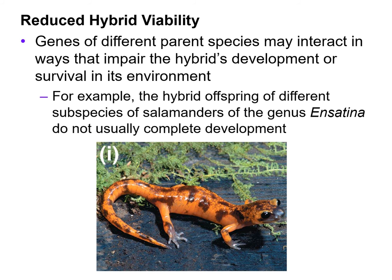The first one we will look at is reduced hybrid viability — meaning this is a sickly little creature. It might die during birth or once it's born. Genes of different parent species may interact in ways that impair the hybrid's development or survival in the environment. For example, the hybrid offspring of different species of salamanders do not usually complete development — a spontaneous abortion may occur, or a sickly salamander would be born that dies. So the survival rate is very low — that is reduced hybrid viability.